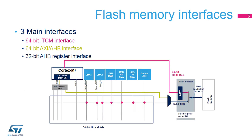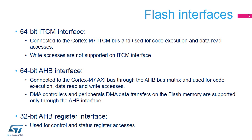The Flash Memory Interface has three main buses: a 64-bit ITCM interface, a 64-bit AXI-AHB interface, and a 32-bit AHB register interface. The Flash Memory is mapped on the ITCM interface of the Cortex-M7 processor and used for code execution and data read accesses. Write accesses to the Flash Memory are not possible through this interface. The Flash Memory remains accessible to the Cortex-M7 processor and other masters such as DMA controllers through the AHB interface. The 32-bit AHB register interface is used for control and status register accesses during user Flash Memory and Option Byte programming.